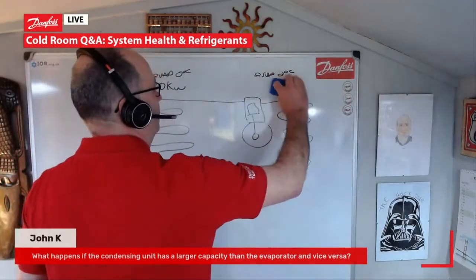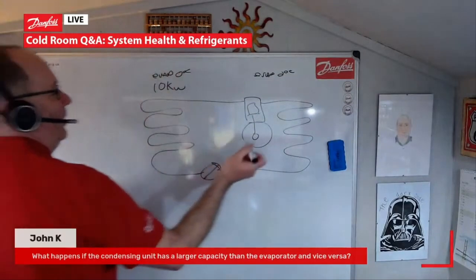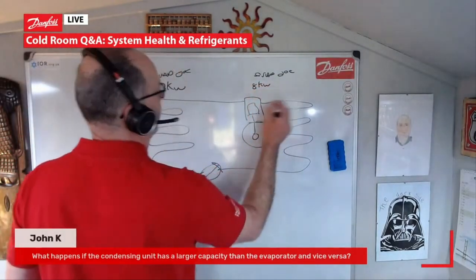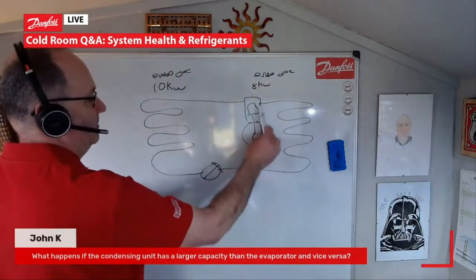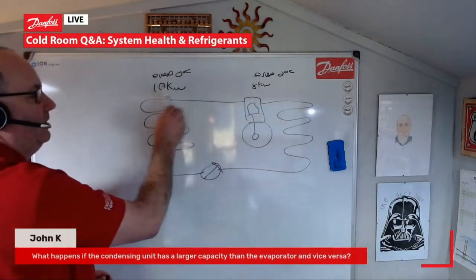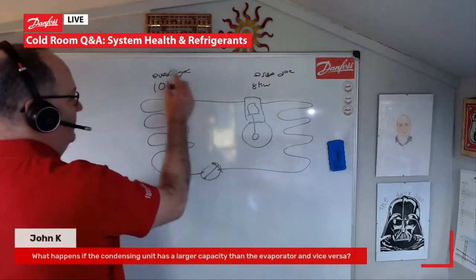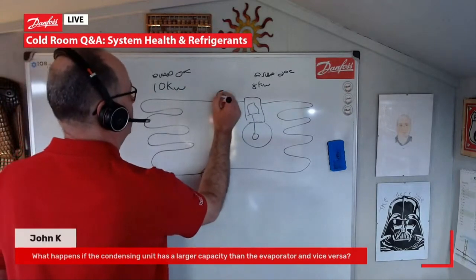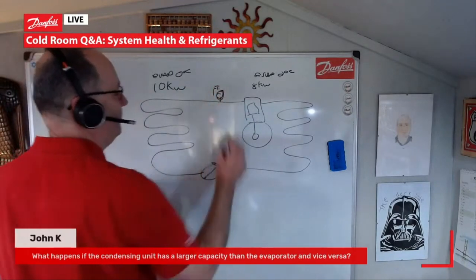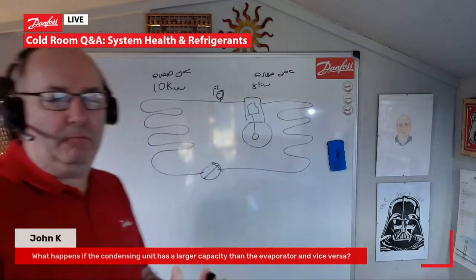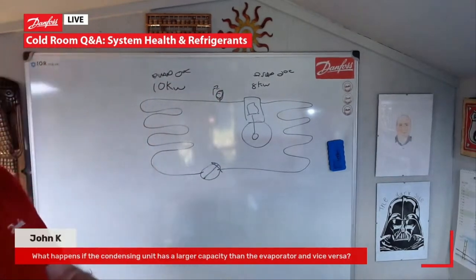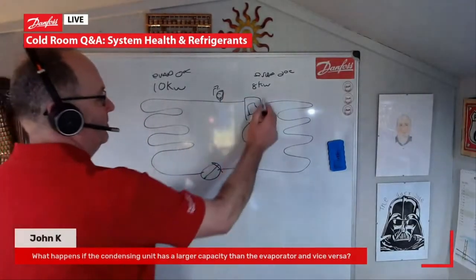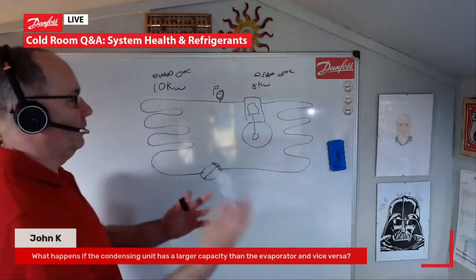If, however, we have — let's say — a 10 kilowatt evaporator and an 8 kilowatt compressor, that compressor is smaller in capacity than the evaporator. What will happen is that because that is a larger evaporator, our suction pressure coming back to our machine will rise — might not rise by much, maybe a few PSI — which in effect is good, because it's giving our compressor something to work at.